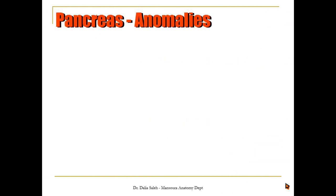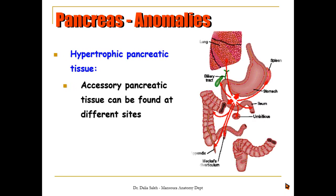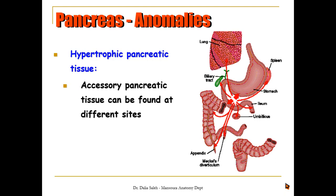The other anomaly is called ectopic pancreatic tissue. In this anomaly, accessory pancreatic tissue can be found at different sites. As shown in this picture, it can be found inside the spleen, around the ampulla, in the ileum, at the biliary system, at the appendix, and even at the lungs. The reason is unknown.